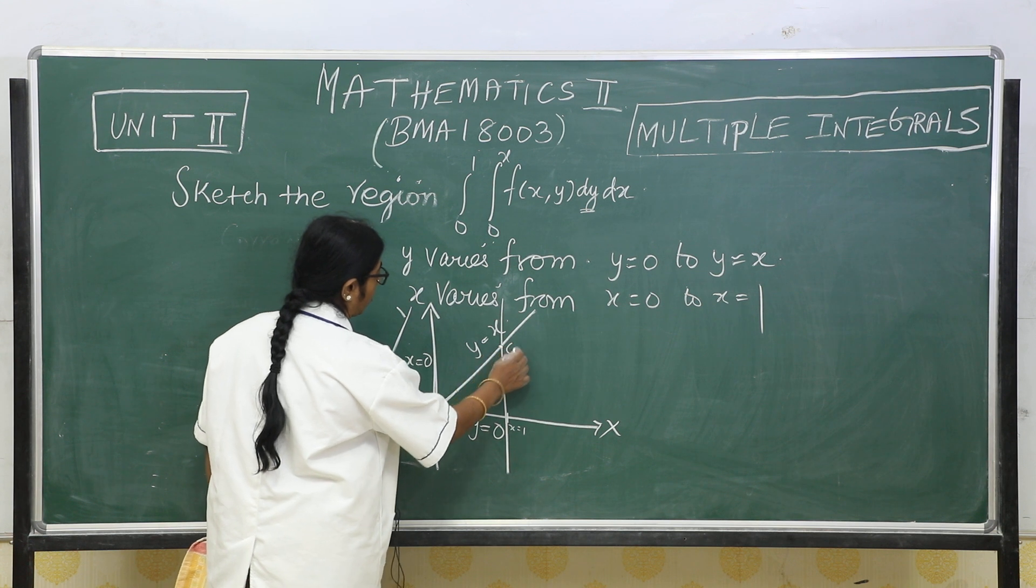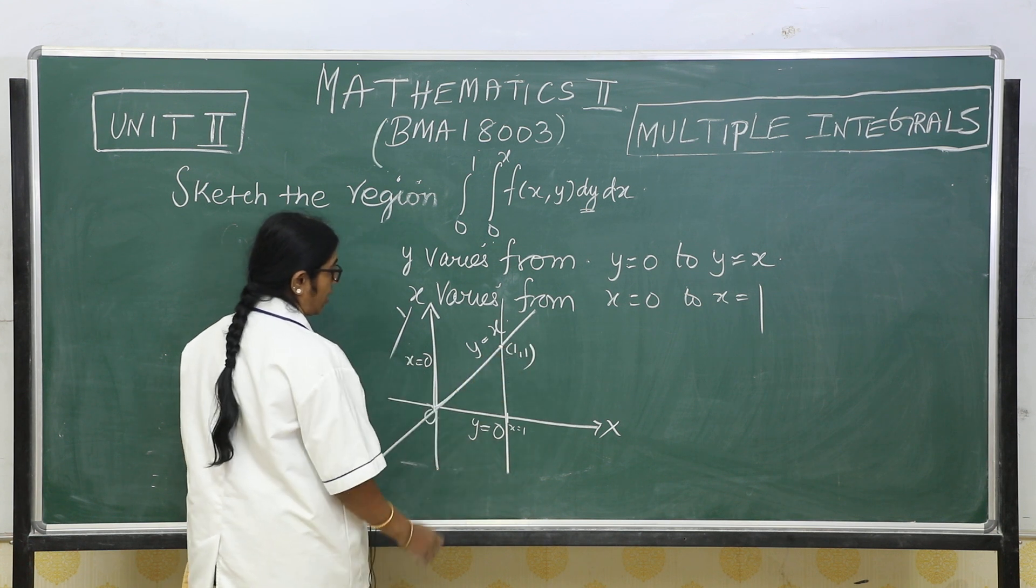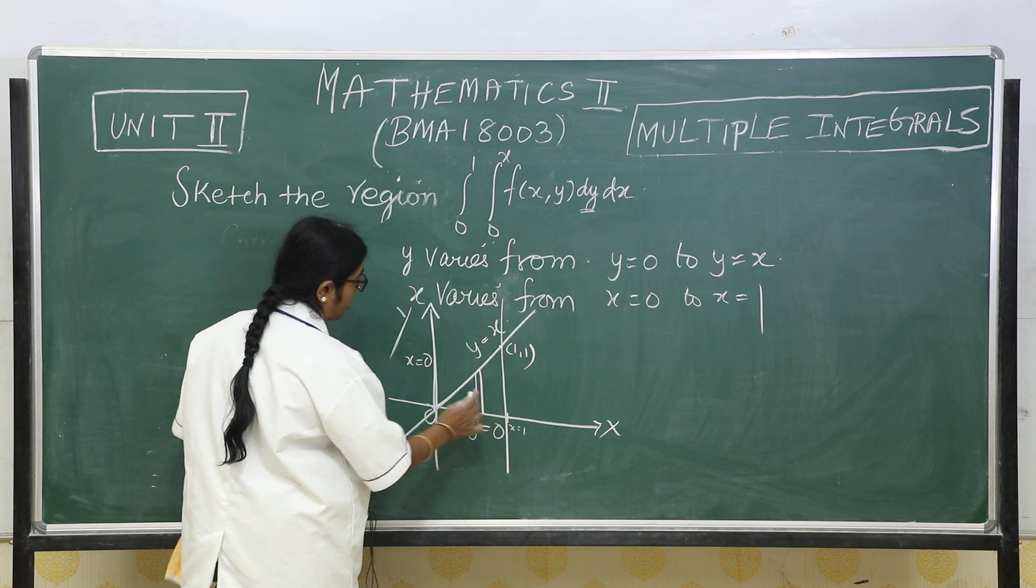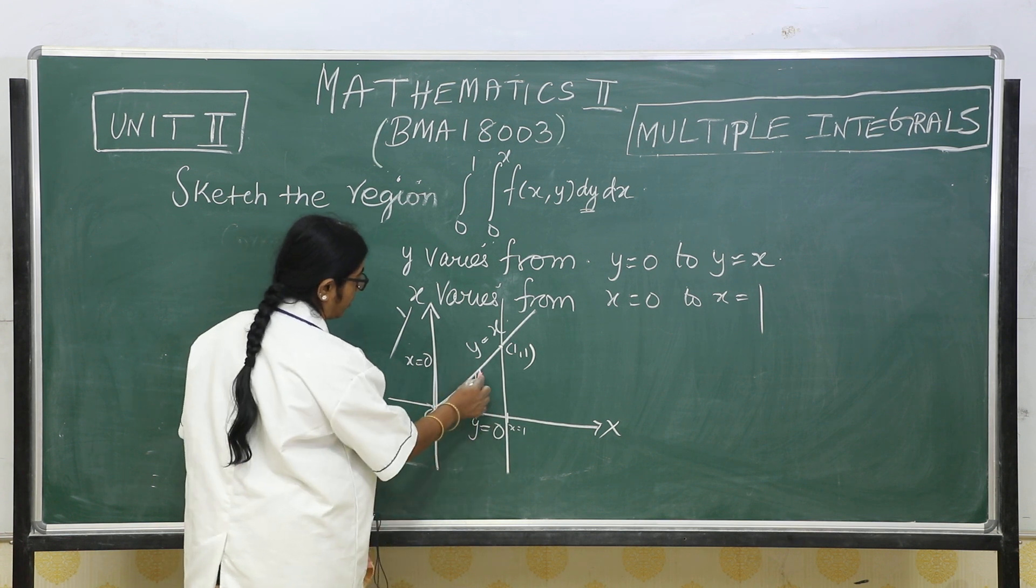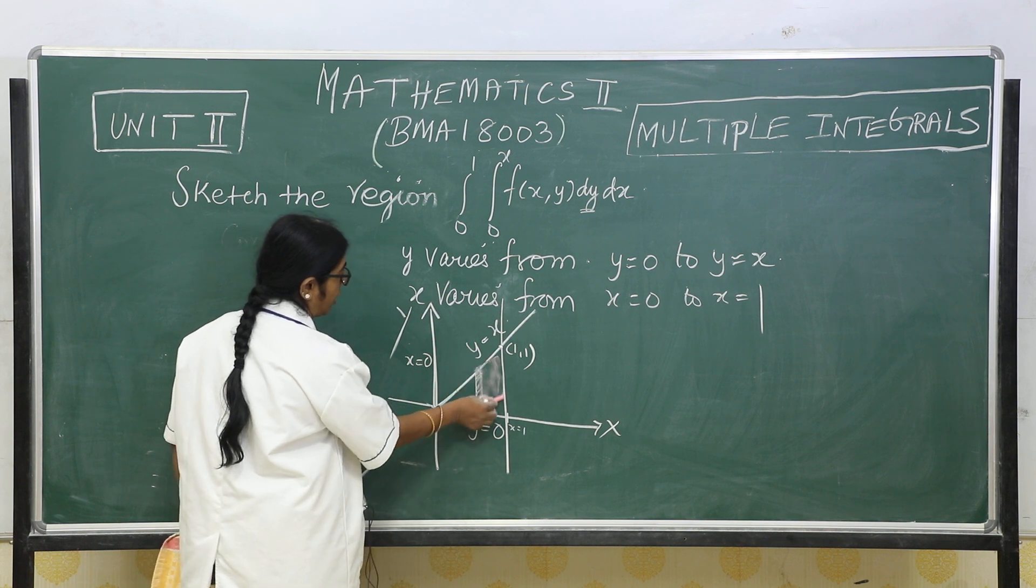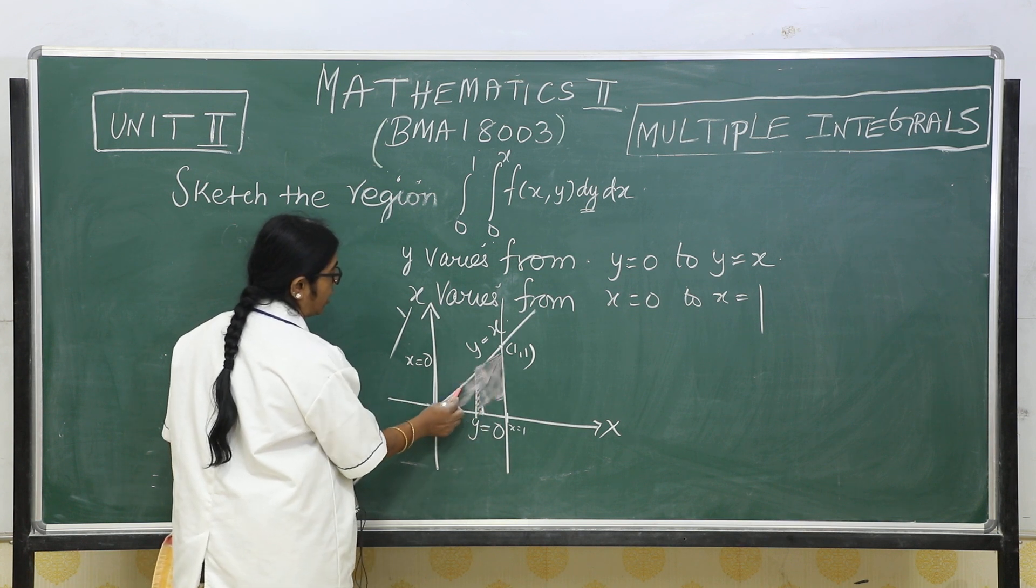So this is the point (1, 1) and this is the line. So the sketching region is this region. This is the vertical strip. So the region is the shaded region.